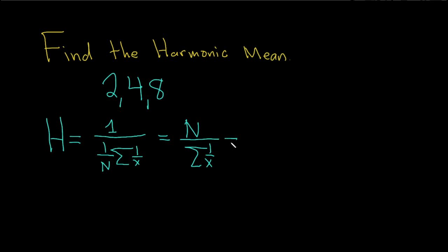So in this case here, N is equal to 3 because we have three numbers. So it's 3 over. And then you just add up these numbers, but you add up the reciprocals. So it's 1 over 2 plus 1 over 4 plus 1 over 8.